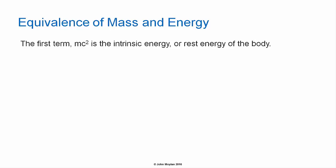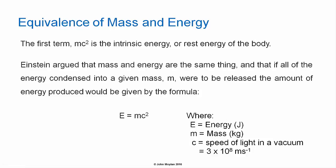The first term, mc², is the intrinsic energy — or the rest energy — of the body. If all of the energy condensed into a given mass m were released, the amount of energy produced would be given by the formula E = mc², where E is the energy released, m is the mass of the body, and c is the speed of light. This is the formula for the intrinsic or rest energy of a body.